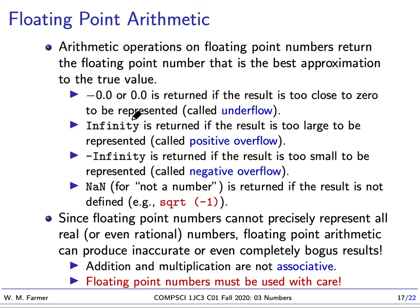Because we have a bit for plus or minus, we actually have two zero values: minus zero and positive zero. These can be returned if our result is too close to zero to be represented. If we have a positive number and we keep dividing it by two, at some point our number will be so small that there is no positive floating point number near it, and our number will be approximated as zero. This is called underflow — a positive number gets smaller and smaller and suddenly becomes zero.